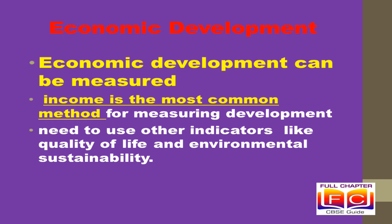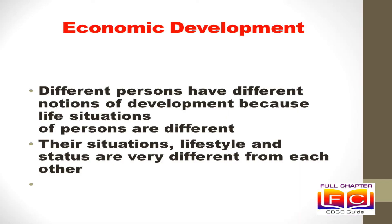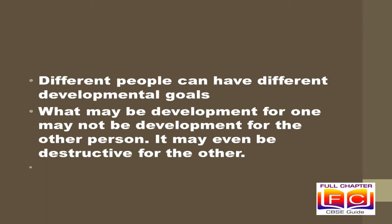We all have aspirations or desires about what we would like to do and how we would like to live. Different people have different aspirations. Why do different persons have different notions of development? Because life situations of persons are different. Development goals of a girl from a rich urban family will be surely different from a farmer in Rajasthan, because their situations, lifestyle and status are very different from each other. One common thing what people desire are regular work, better wages and decent price for their products. In other words, people want more income.